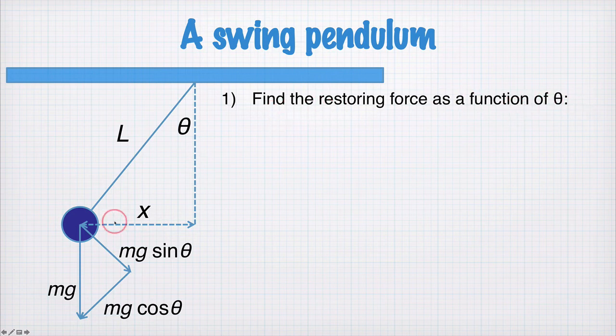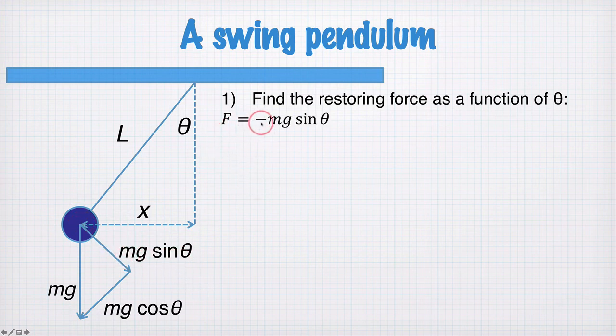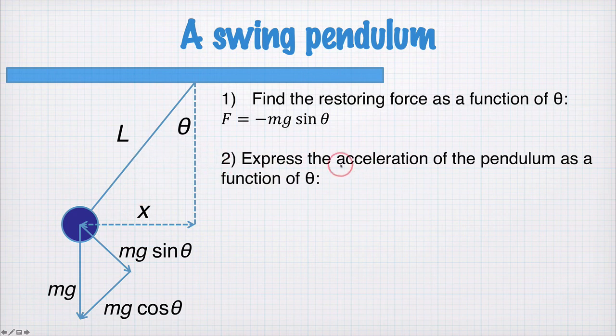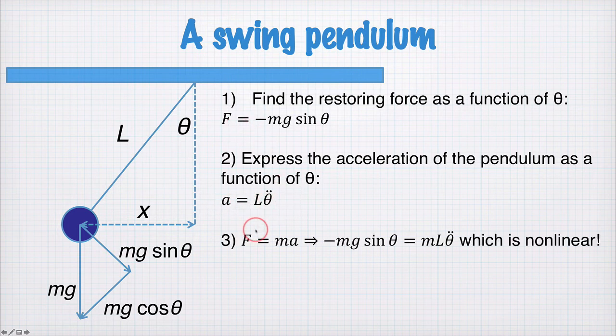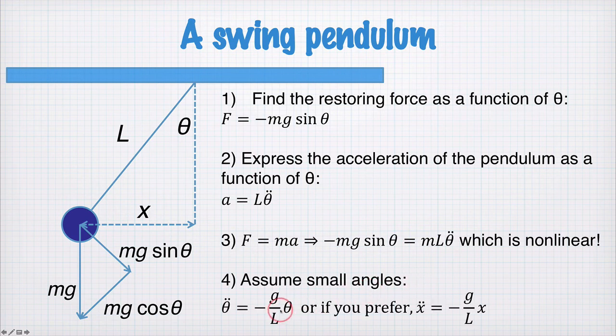We find a restoring force as a function of theta. The restoring force is this component here pulling you back towards the center, that's mg sin theta. It's negative because it's in the opposite direction to theta. Then we have an acceleration of the pendulum as a function of theta. The acceleration A is equal to L times theta double dot. We equate mass times acceleration with the force to get this equation of motion, which is non-linear. Make the small angle approximation, and we get an equation for theta double dot equal to negative g on L times theta. Or you can write it in terms of the displacement x. This is our equation for simple harmonic motion in the limit that the angle is small.